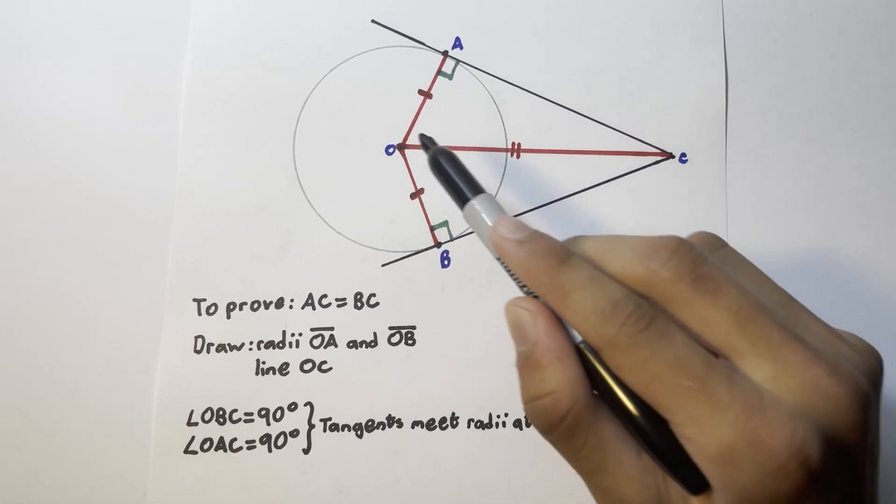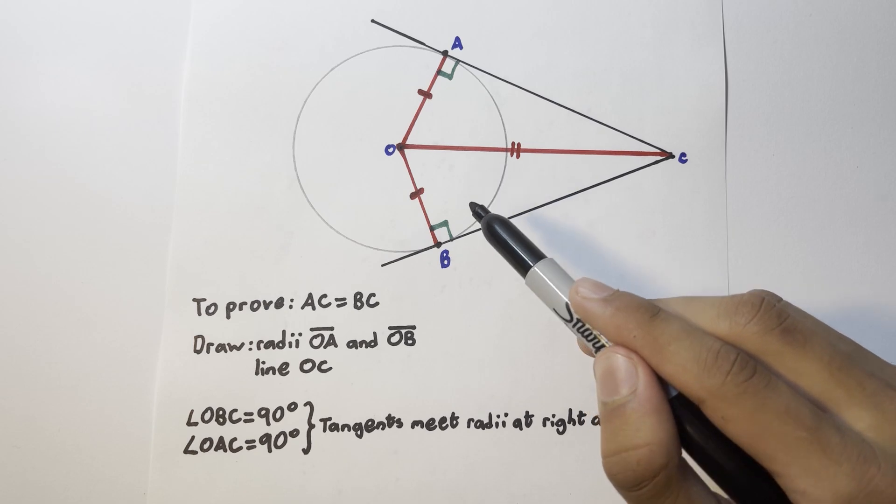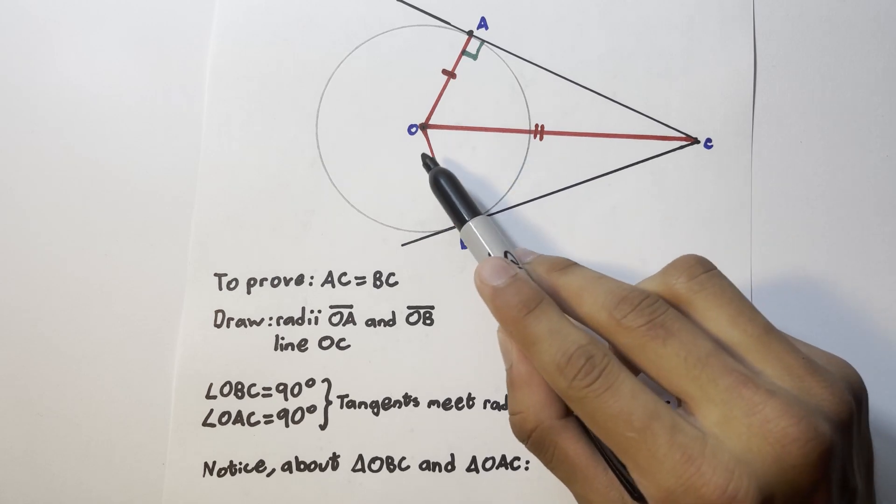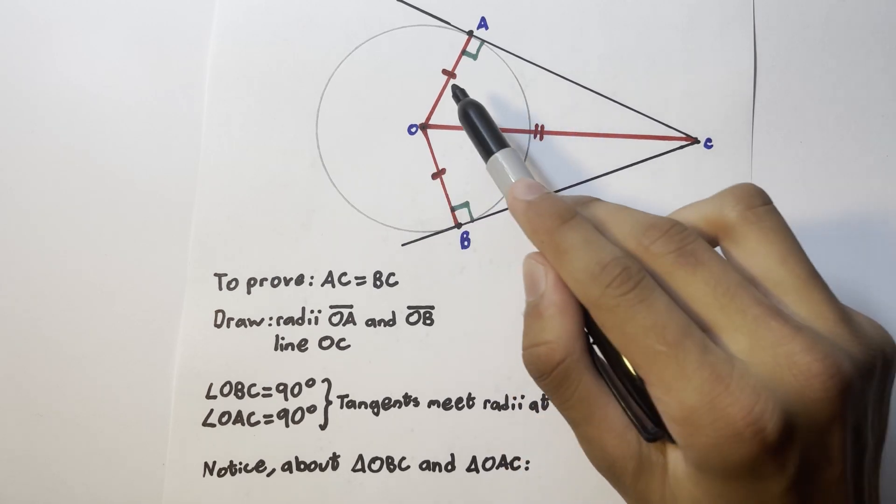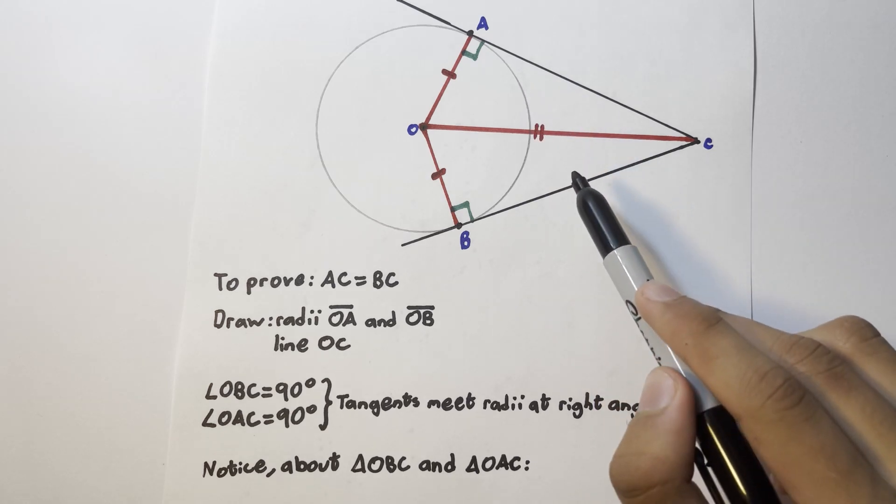Now we have that angles OBC and angles OAC, where the radius meets the tangents, are 90 degrees, right angles. Now there are three things which we can notice about the triangles OBC over here and OAC over here, which will help us make a deduction which will be able to prove the theorem for us.